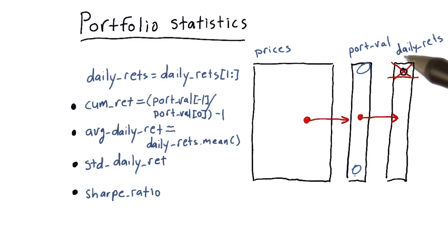Average daily return is just the average of these numbers. So we just take the mean, very simple. And standard deviation of daily return, again, simple. Just use the standard deviation function right there.